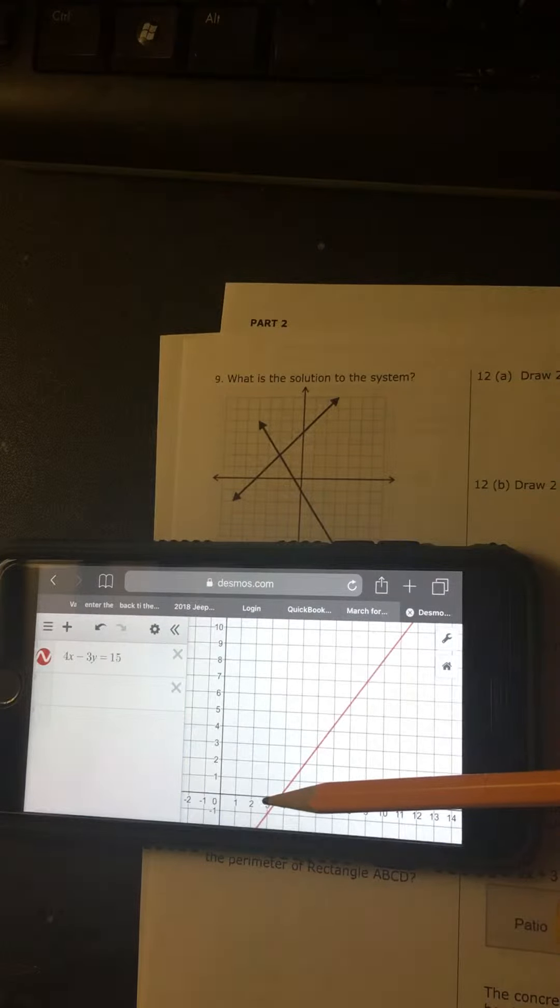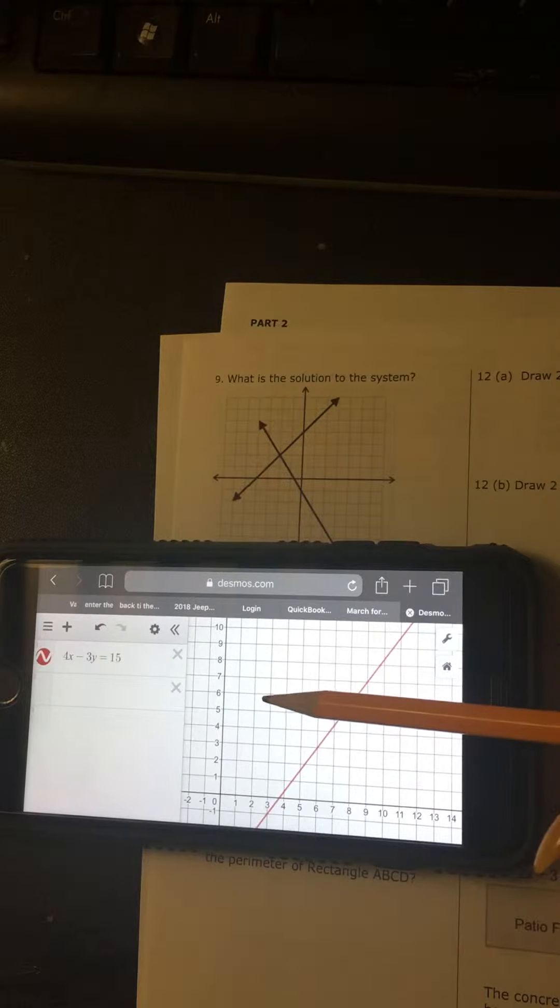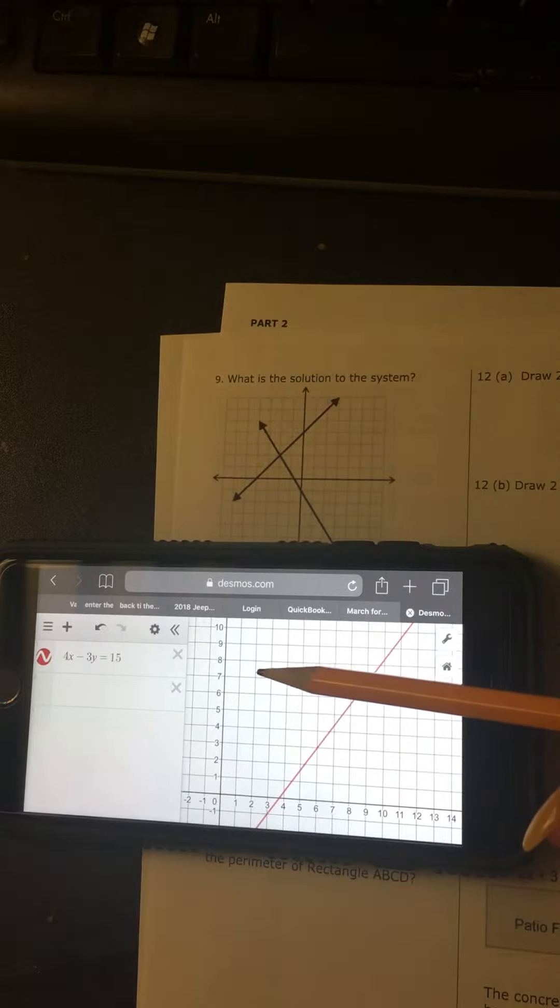So you go rise, it's rise over run. So 1, 2, 3, 4, 5, 6, 7. 7. Yeah, 7.